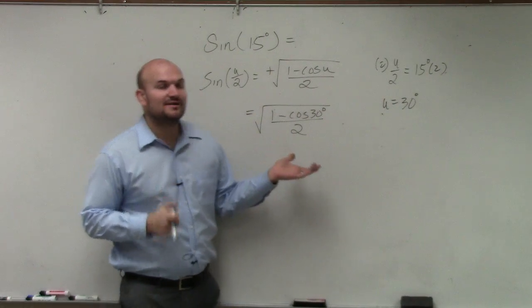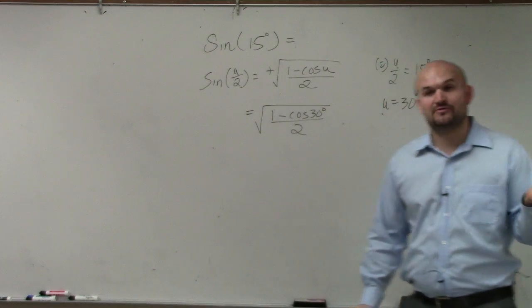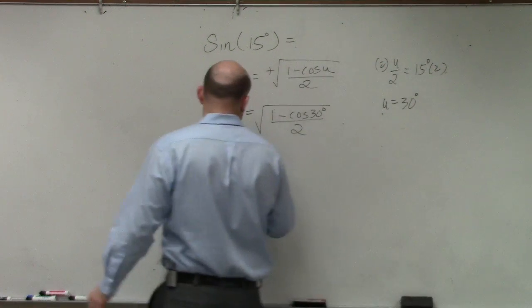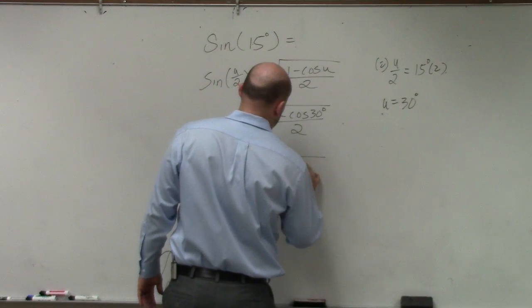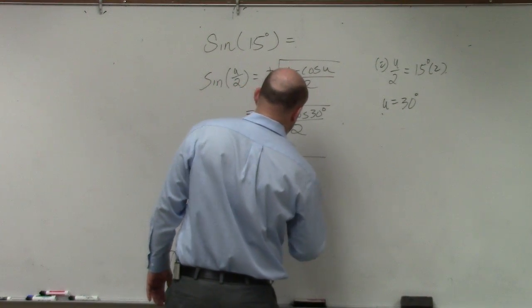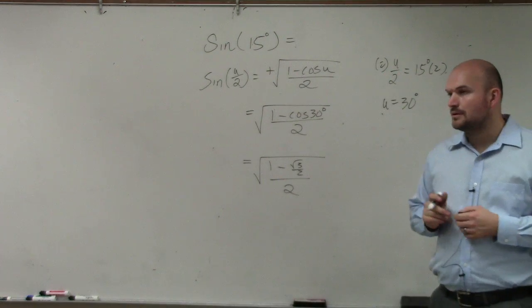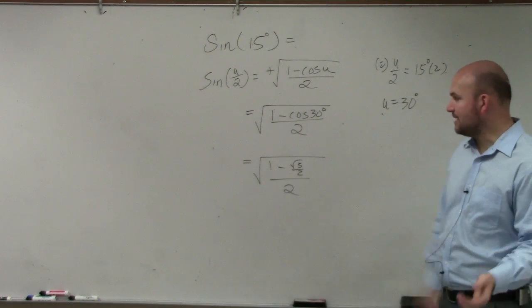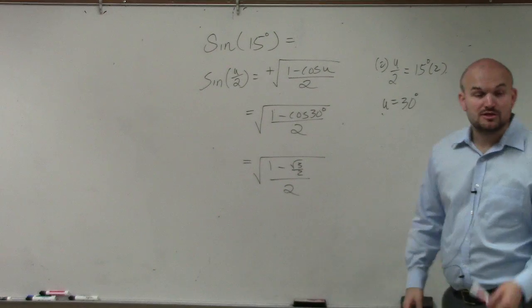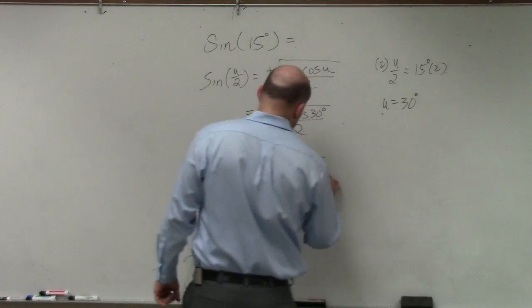So the cosine of 30 degrees, if you guys remember, you look at the unit circle, cosine of 30 degrees, that's going to be square root of 3 over 2. Right? Now, again, we've got to get rid of the radical, or we've got to get rid of the 2. So just like we did in your last example, we've got to get rid of the 2, so I'm going to multiply by 2 over 2.